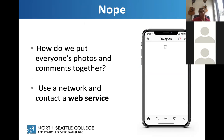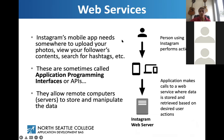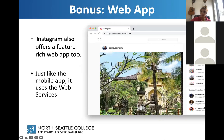We need to know how we put everyone's photos and comments together — we use a network and contact a web service. The Instagram mobile app needs somewhere to upload photos, view followers' content, and search hashtags. These are called Application Programming Interfaces, or APIs. They allow remote computers and servers to store and manipulate data. A person using Instagram performs an action; the app makes calls to a web service where data is stored and retrieved. Instagram also has a feature-rich web app that uses the same web services.